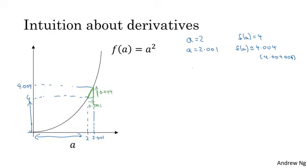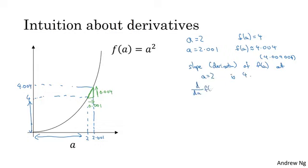So in the language of calculus, we say that the slope, that is the derivative of f of a, at a equals 2, is 4. Or, to write this out with our calculus notation, we say that d/da of f of a is equal to 4, when a is equal to 2.